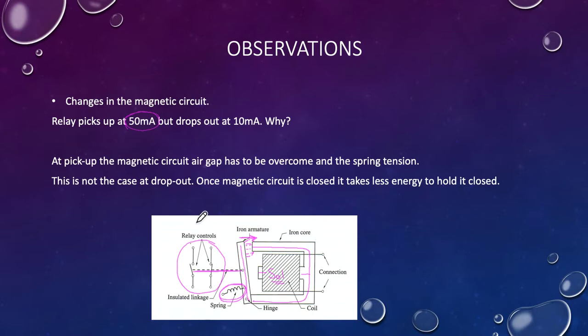But this is not the case at dropout. Once the magnetic circuit is closed, it takes less energy to keep it or hold it closed. So once I've got it closed, it doesn't take anywhere near as much energy to hold it closed. That's why at dropout it only takes 10 milliamps. I can drop the current all the way from 110 milliamps at 24 volts.